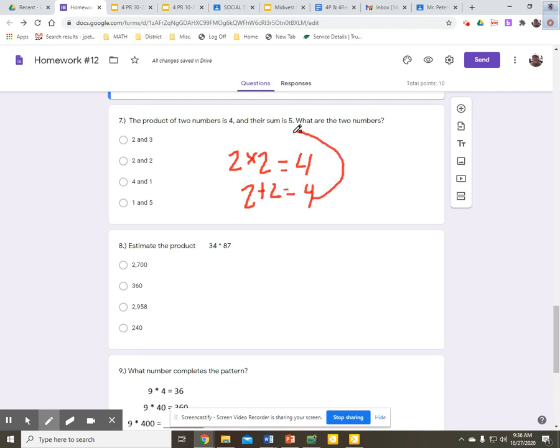So I need to think of two other numbers. One times four is four, and one plus four is five. So my two numbers are four and one. That's choice C.